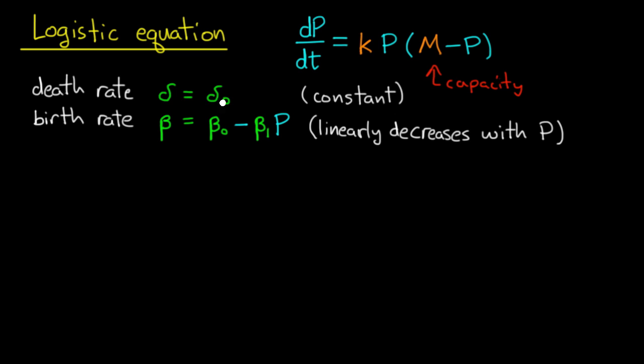So if we assume that we have a constant death rate, delta equals delta zero, and a birth rate which is not constant but rather decreases linearly with the population, so I write beta equals beta zero minus beta one P.